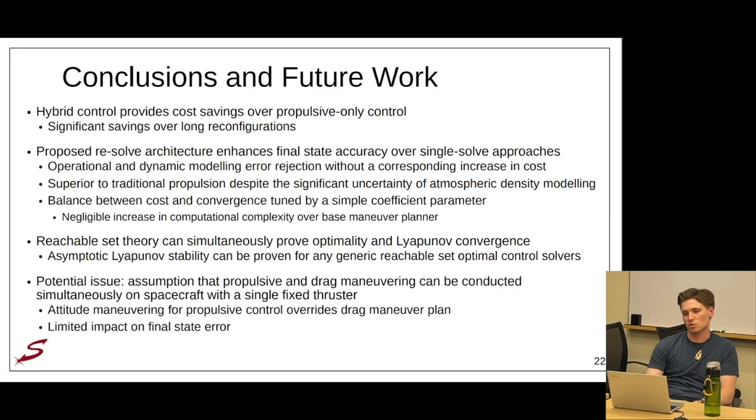So in conclusion, hybrid control provides cost savings over propulsive only control and significant savings on reconfiguration. And the proposed resolve architecture enhances final state accuracy over single solve approaches, accomplishing operational dynamic modeling error rejection without a corresponding increase in cost and provides superior performance to traditional propulsion despite significant uncertainty of atmospheric density modeling. It also introduces an interesting balance between cost and convergence through this simple tuning coefficient parameter where an increase in the coefficient will cause a lower in-plane maneuver plan cost but tighter bounds on the remaining space to which your other errors can fit into and still maintain Lyapunov stability.